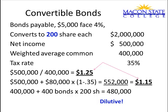So now you're going to add 80,000 shares to the denominator. The earnings per share is $1.15, which is lower than the basic earnings per share of $1.25. So now it's dilutive. You would have a basic earnings per share of $1.25 and a diluted earnings per share of $1.15.